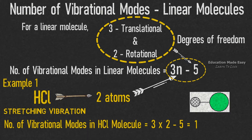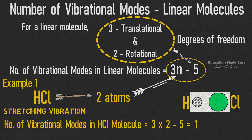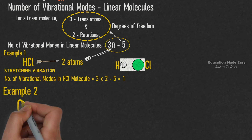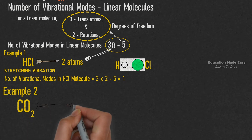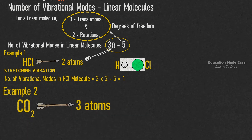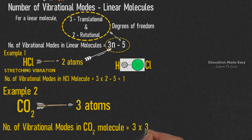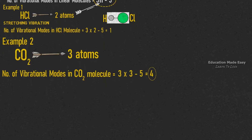The figure shows the stretching vibration in the HCl molecule for better understanding. Example 2: Consider the CO2 molecule. There are 3 atoms in the CO2 molecule. Therefore, the number of vibrational modes in the CO2 molecule is equal to 3 × 3 − 5, which is equal to 4. This means there are 4 vibrational modes in the CO2 molecule.